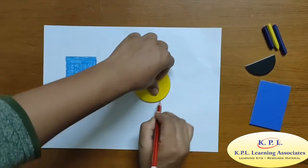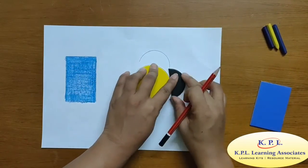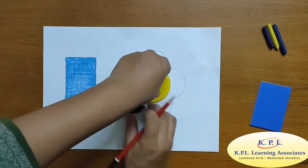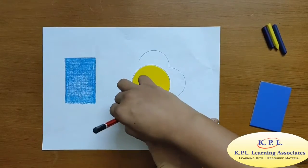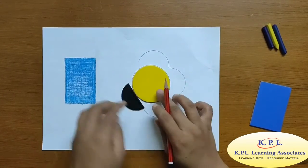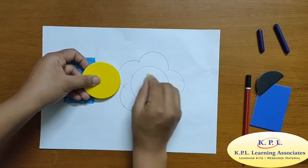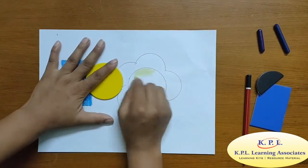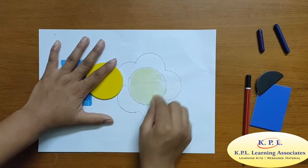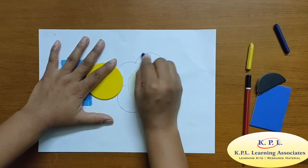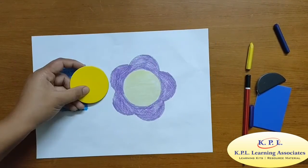I am making a flower by using a circle and semi circle. Let's colour this flower. My flower is ready.